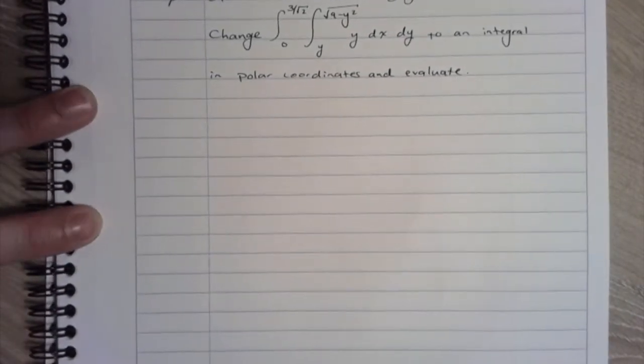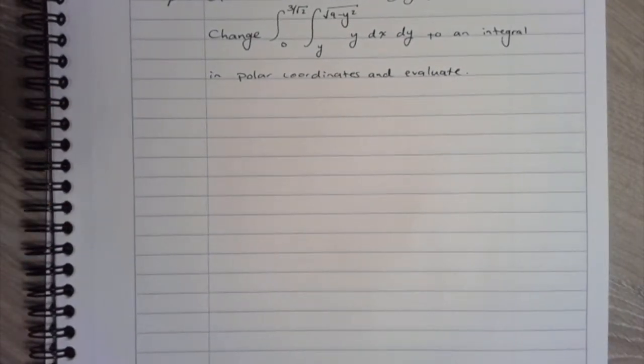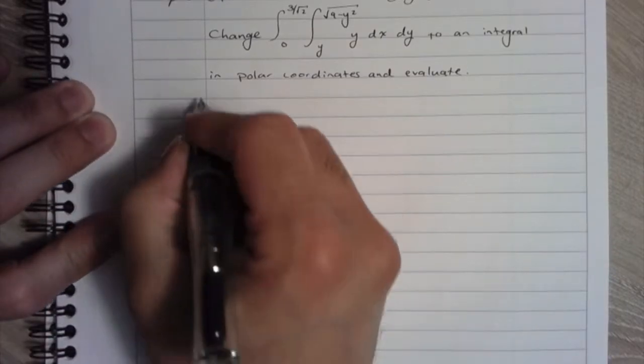All right, so what we're going to do is we're going to take this double integral and we're going to change it to polar coordinates and evaluate. First let's draw a picture of the situation.